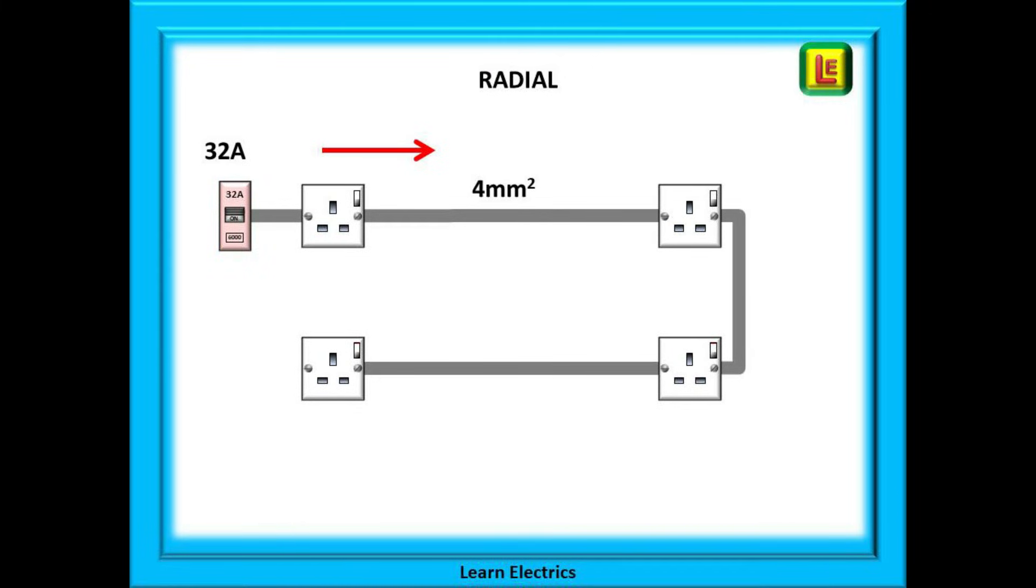Now, imagine that the 32 amp circuit, wired in 4 millimeter cable, follows a route around the house and ends up next to the consumer unit. Here, the current flows out of the consumer unit, the breaker, and stops at the end of the circuit. There is only one path for it to follow.